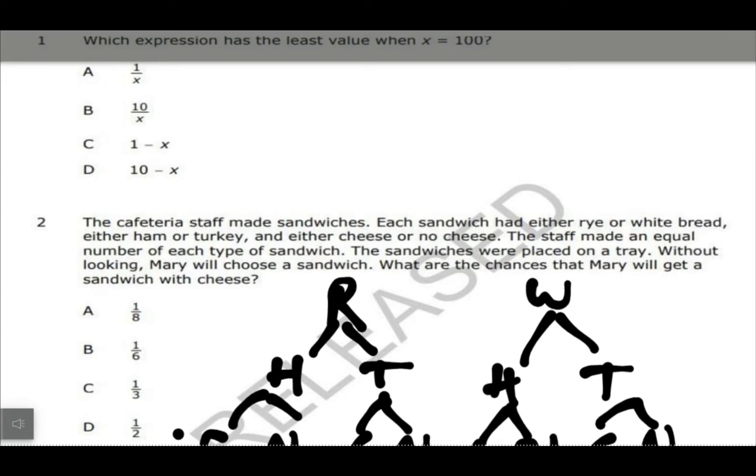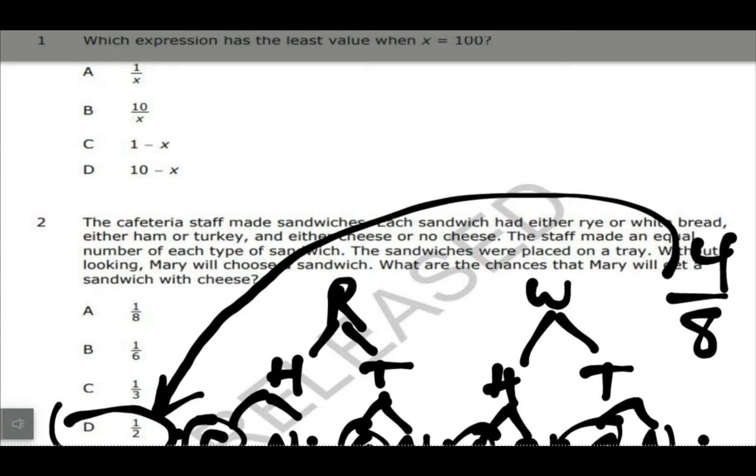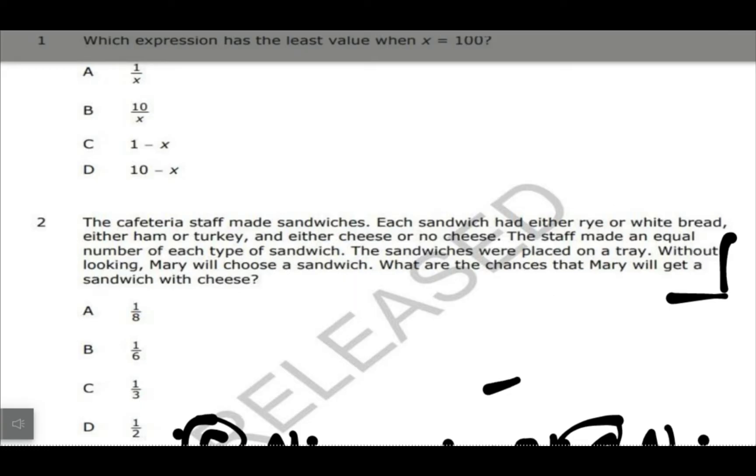Remember, you can count the bottom row, see how many total outcomes there are. If I count all those, there is out of eight. Okay, there's eight total outcomes. And then one, two, three, four of them have cheese, so that's four out of eight, which is really the same thing as one half. Tree diagram is helpful just to kind of have a visual for that one.